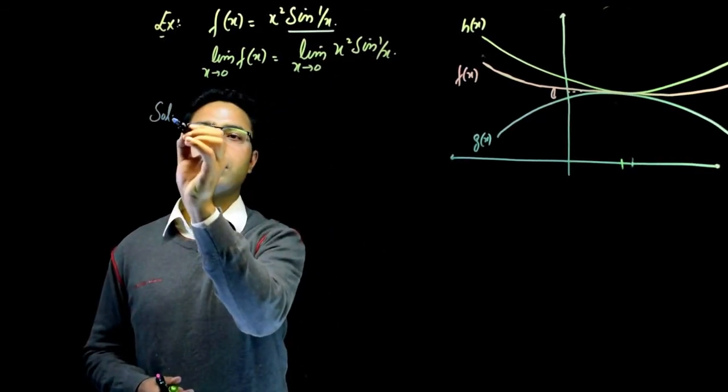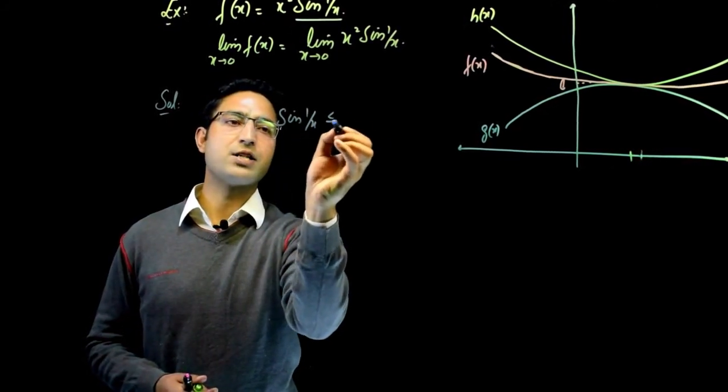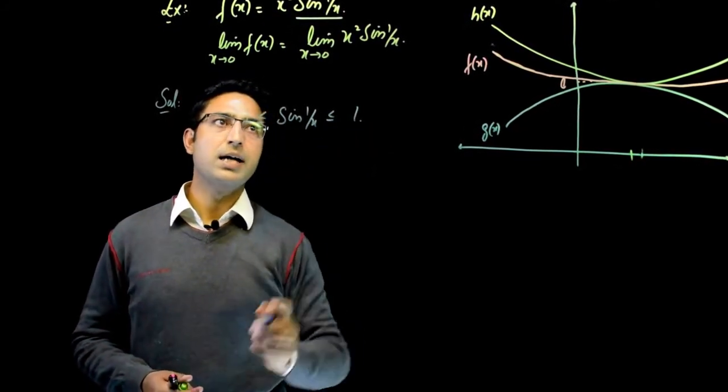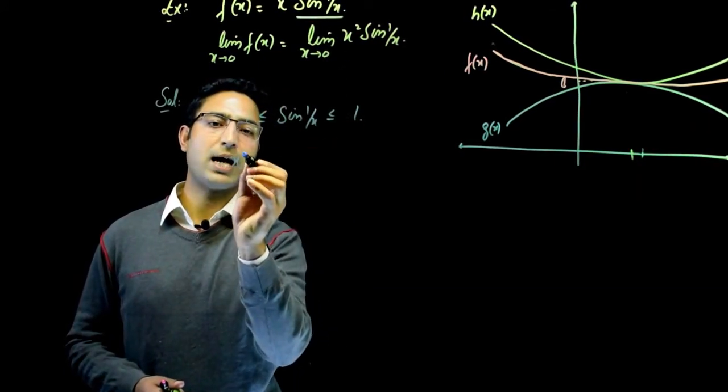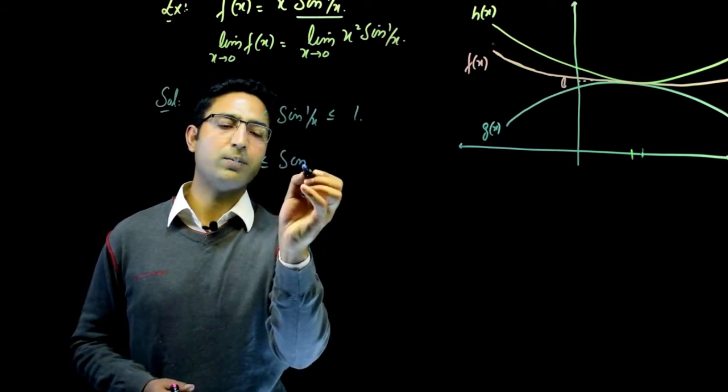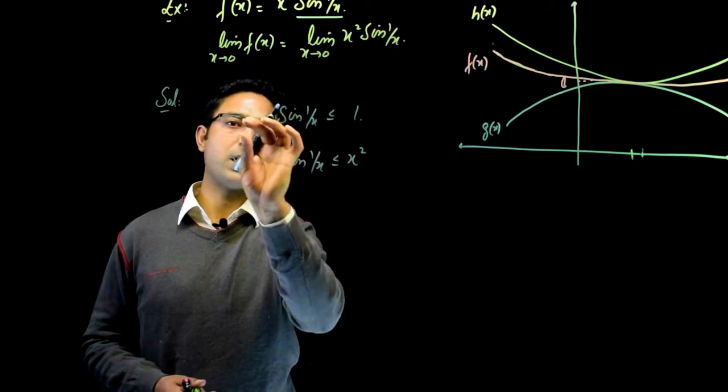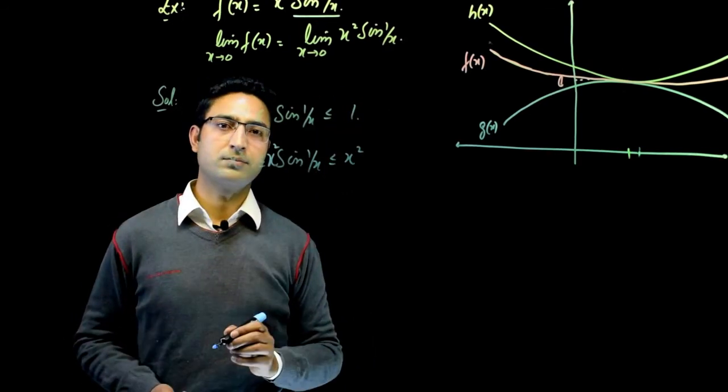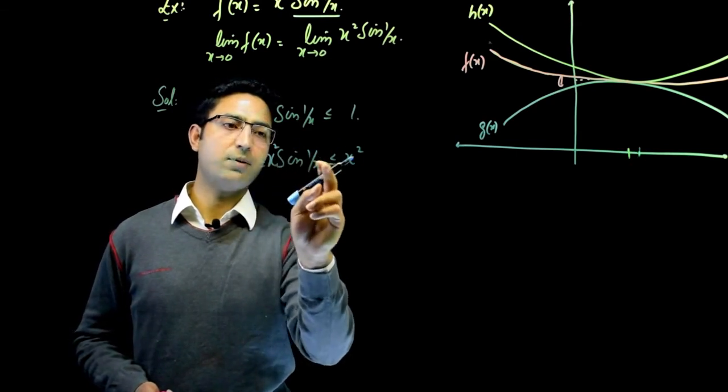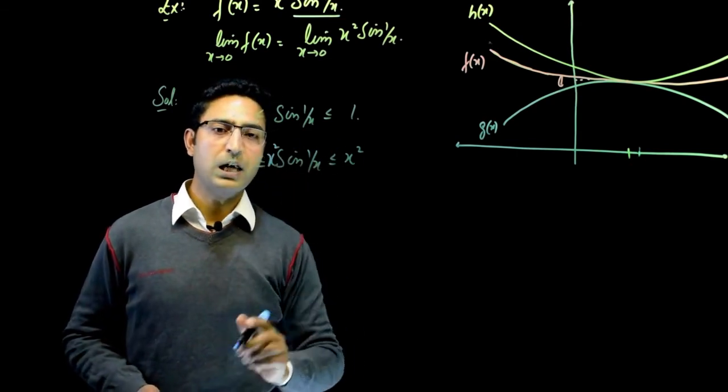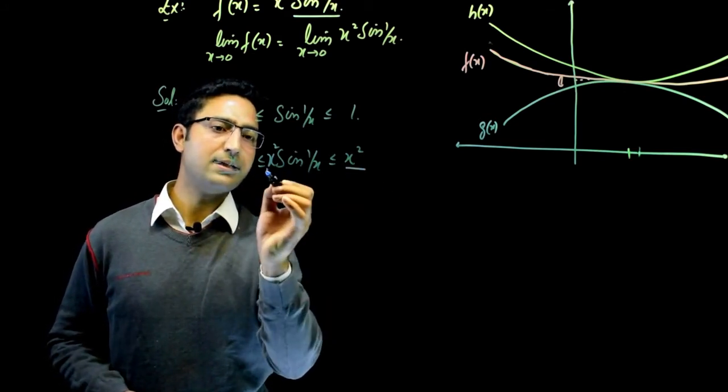That means we have to look at the limit x goes to 0 of x squared sine of 1 by x. We know that sine x always lies between minus 1 and 1, and so does sine of 1 by x. Therefore, the solution will have minus 1 less than or equal to sine of 1 by x less than or equal to 1. If I multiply x squared on every side, it will become minus x squared less than or equal to x squared sine of 1 by x less than or equal to x squared.